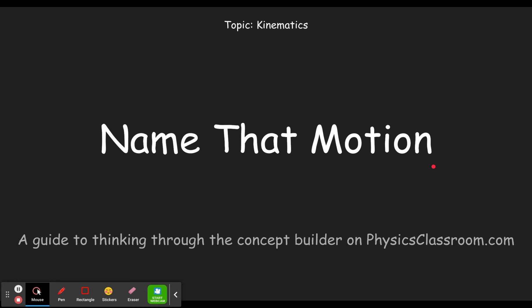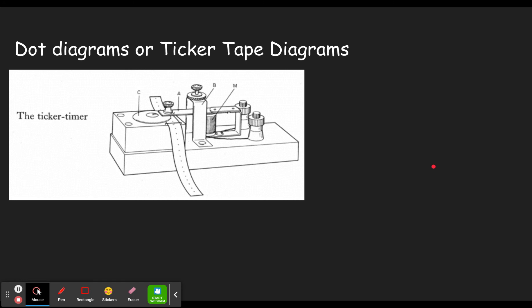Last time, in the video I made on acceleration, we talked about dot diagrams and ticker tape diagrams — how you attach a string to a car which, as it's moving, pulls it through and leaves a little mark every tenth of a second. The dots can tell you how fast it was moving: the farther apart they are, the faster the tape was being pulled through; the closer together, the slower.